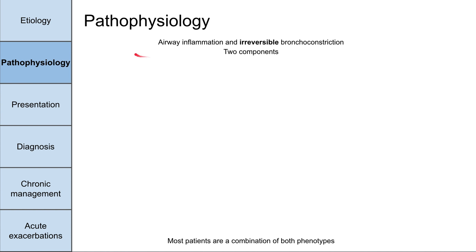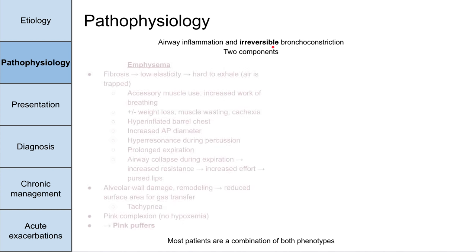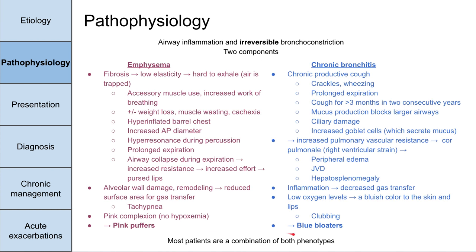Now let's talk about the pathophysiology of COPD. It's similar to asthma — there are two mechanisms: airway inflammation and bronchoconstriction. What makes COPD different from asthma is that the bronchoconstriction is irreversible, so albuterol doesn't really fix COPD. Classically, patients present as one of two distinct phenotypes: pink puffers and blue bloaters, associated with emphysema and chronic bronchitis respectively. In reality, most patients are a combination of both.